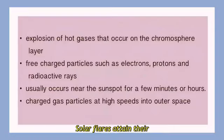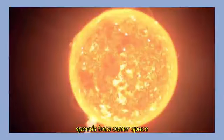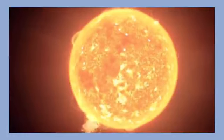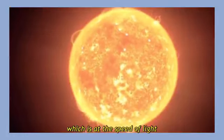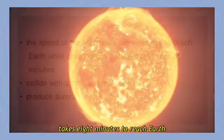Solar flares attain their maximum brightness level within a few seconds or minutes and then become dim after a few minutes or hours. Solar flares spout charged gas particles at high speed into outer space. The light from solar flares, which travels at the speed of light, takes 8 minutes to reach Earth.